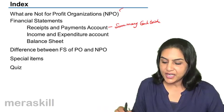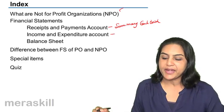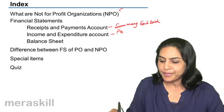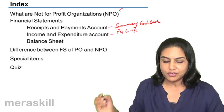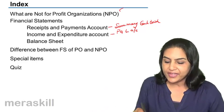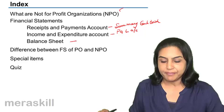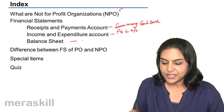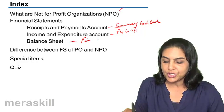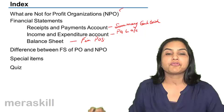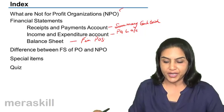Then we will discuss the income and expenditure account, which is similar to a profit and loss account. And then the balance sheet, which gives us the financial position of the not-for-profit organization.